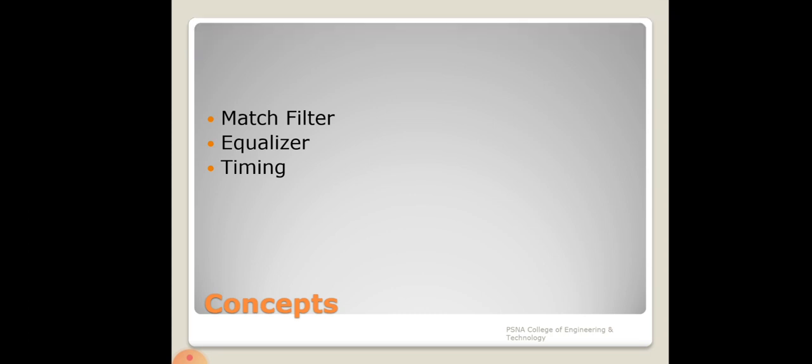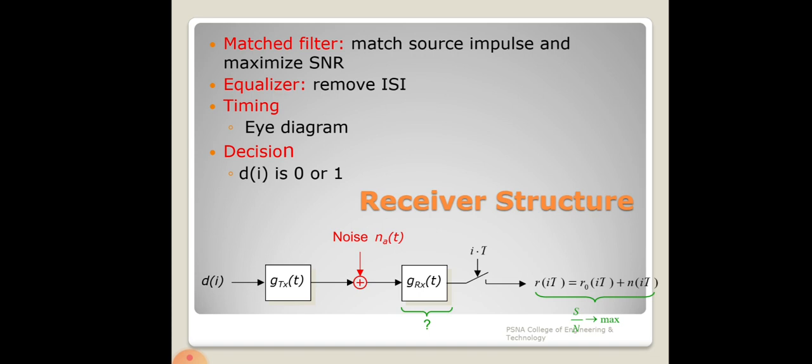The matched filter, equalizer, and timing are the basic concepts for channel equalization. The receiver structure is built on these three elements. The matched filter maximizes the signal-to-noise ratio, the equalizer removes inter-symbol interference, and with the help of the eye diagram we can see how well we can recover the original signal at the receiver.